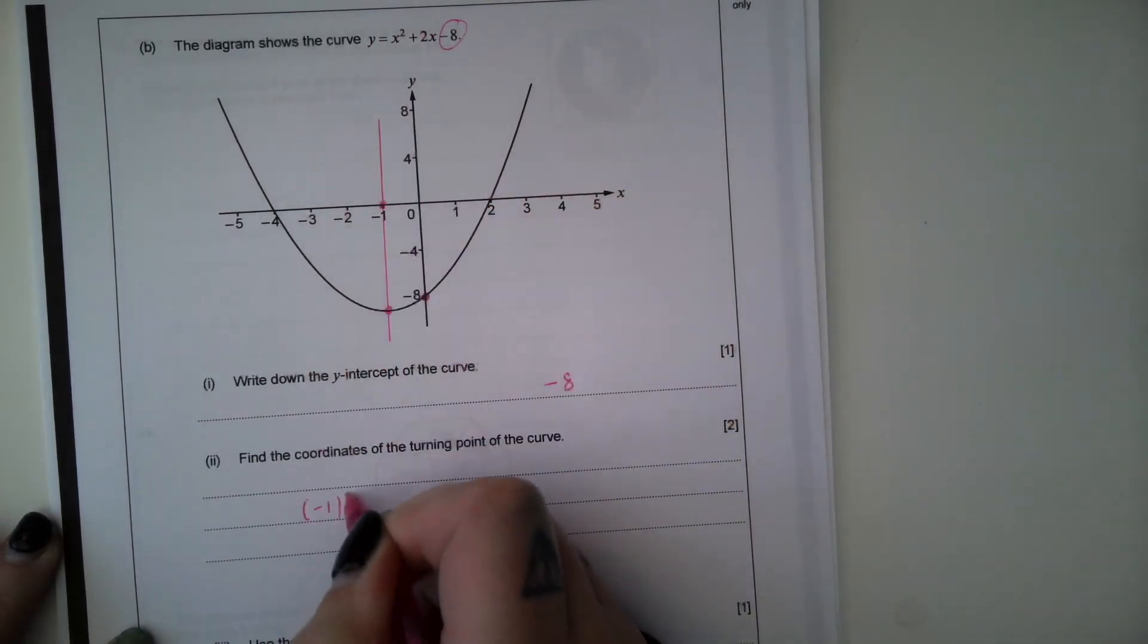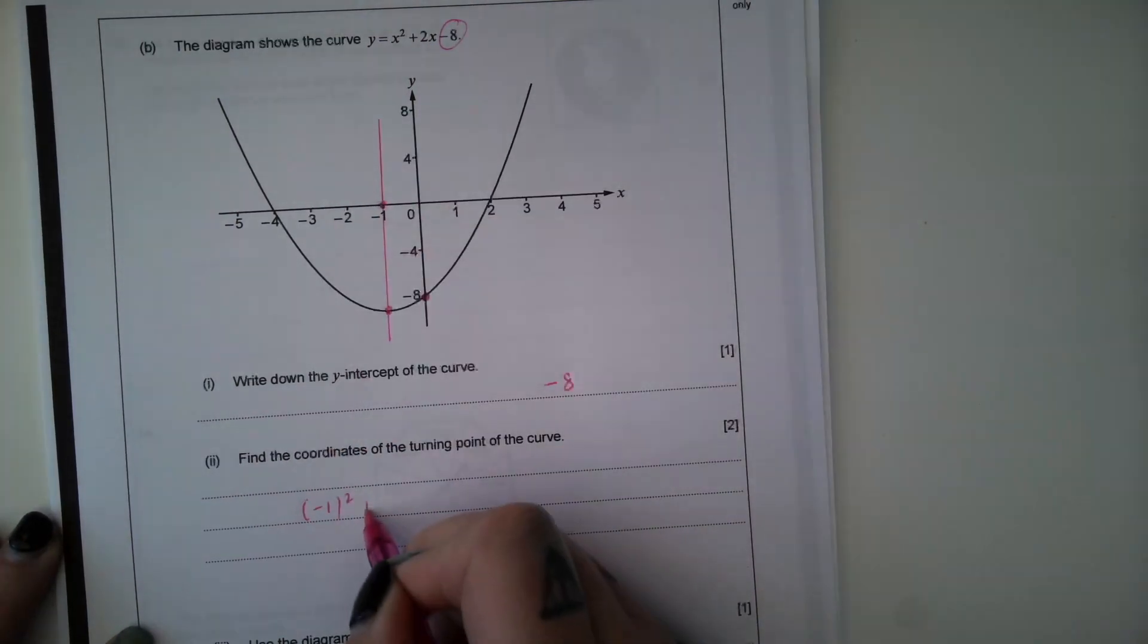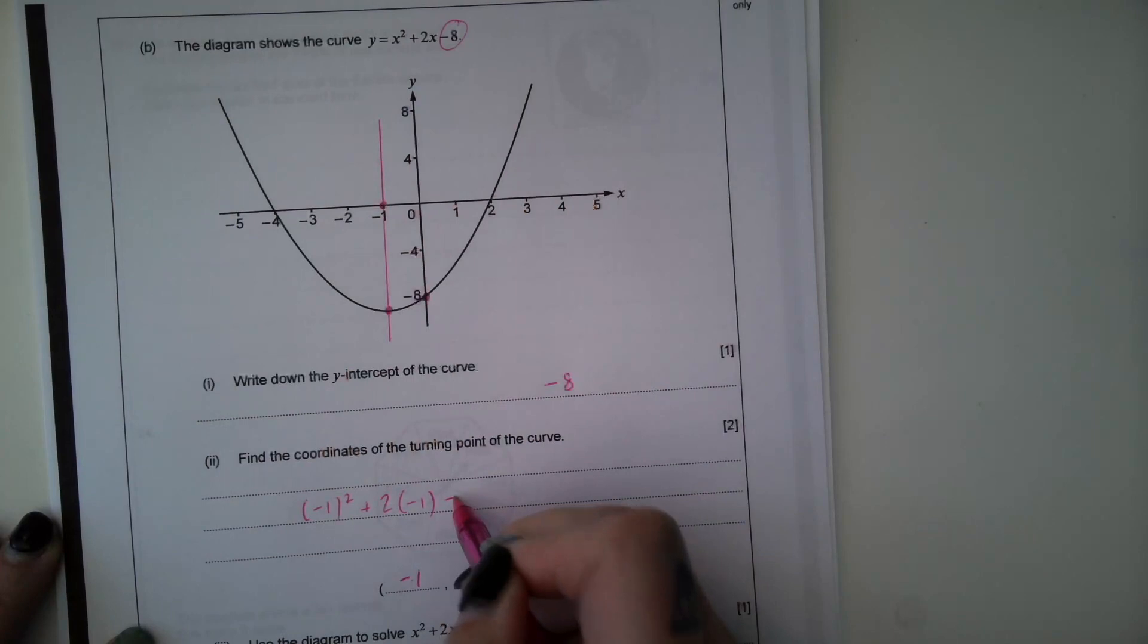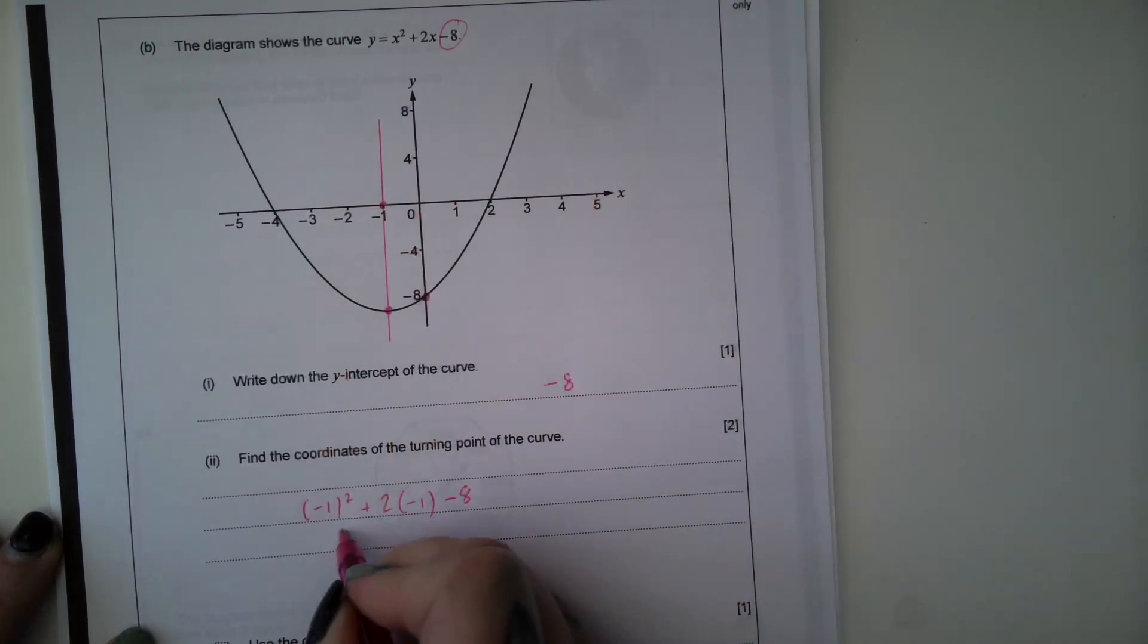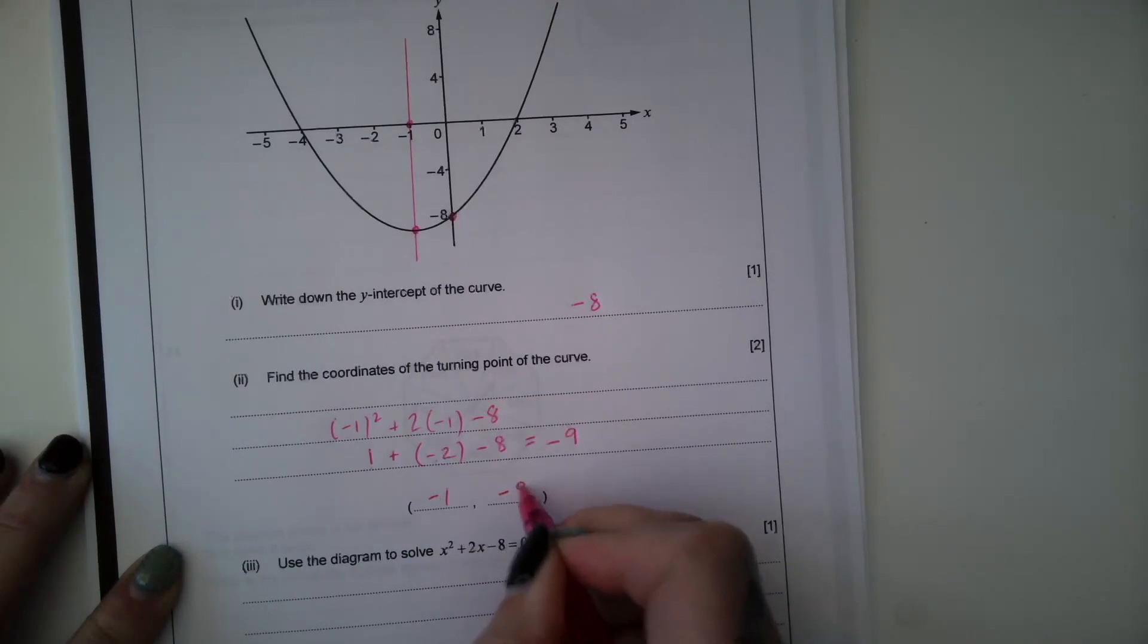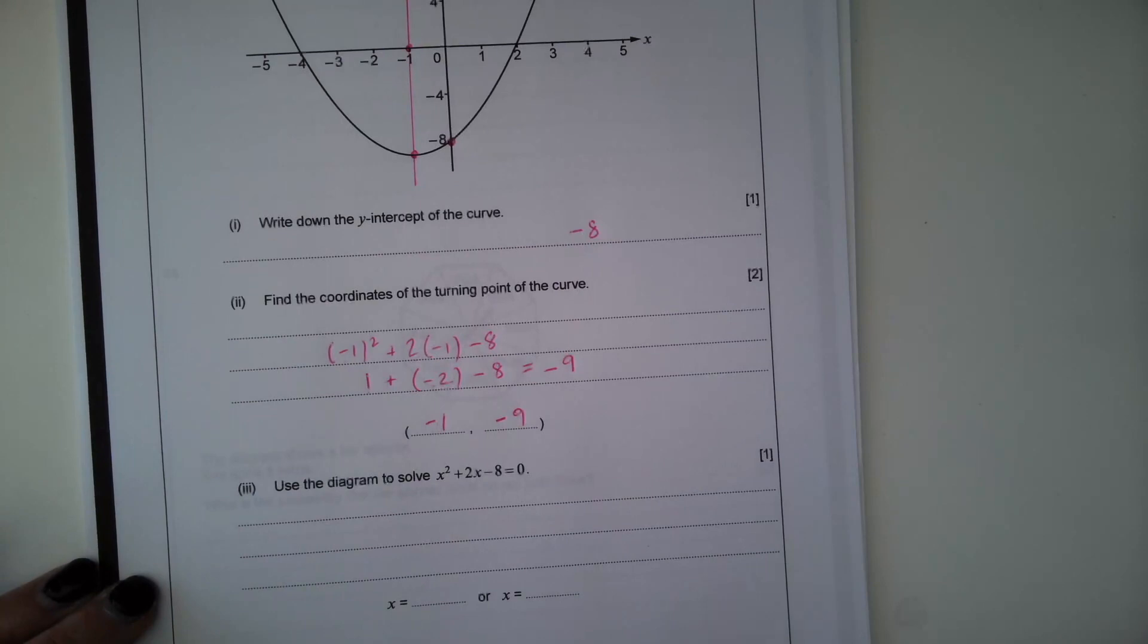So X squared, so minus 1 squared, because we've said our X coordinate is minus 1. Add 2 times minus 1, so 2 times X, subtract 8. Negative 1 squared is 1. 2 times negative 1 is negative 2. And then we've got subtract 8. So 1 subtract 2 is negative 1. Subtract 8 is negative 9.